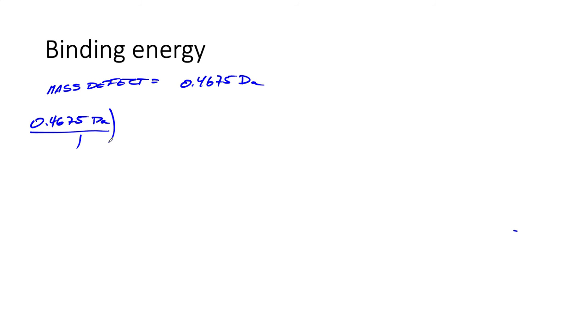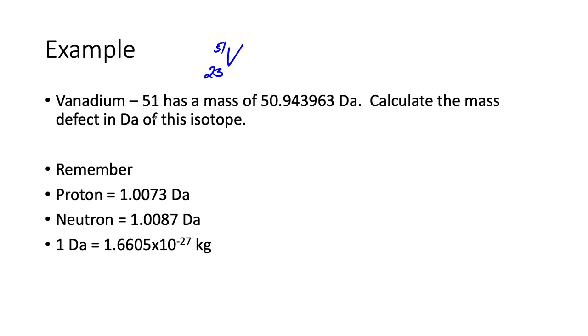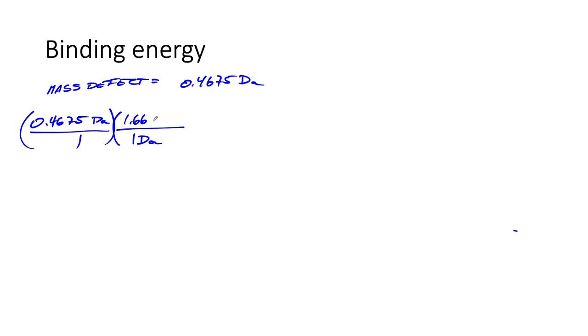To do this, I'm going to put these around parentheses. One dalton is 1.66—I'm going to go back and get the other two digits—05, times 10 to the minus 27 kilograms.